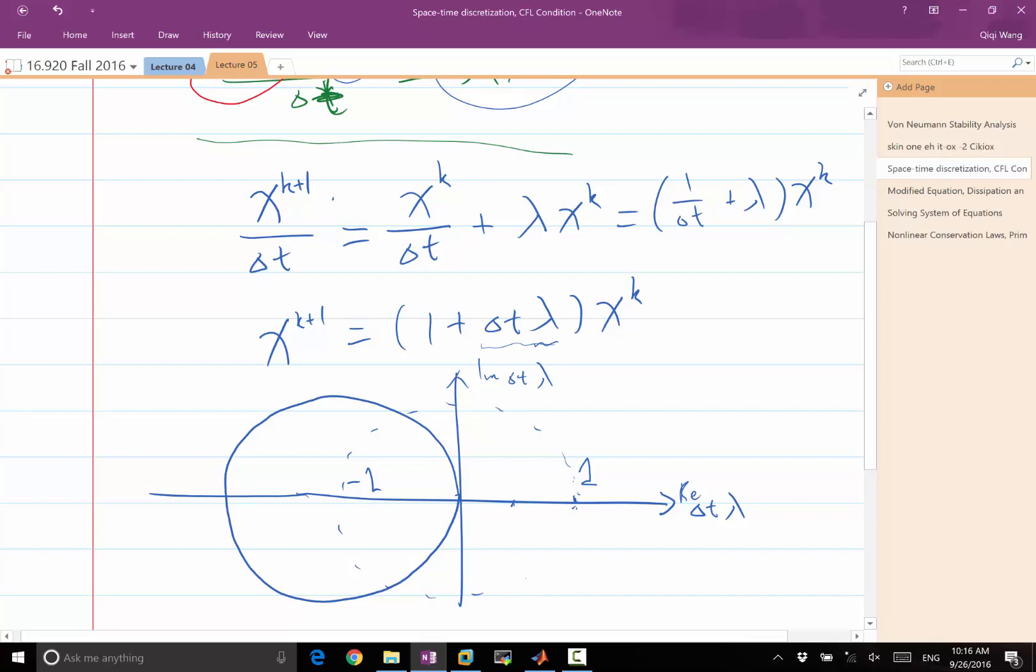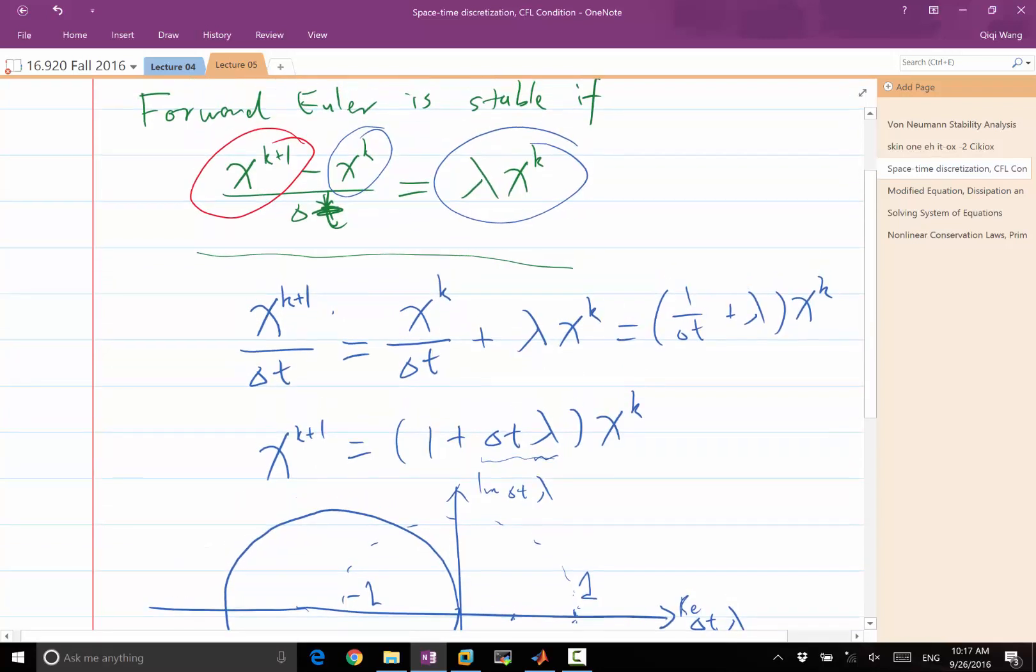And the dashed circle has a modulus less than 1. And the modulus less than 1 is what we need for this iteration to be stable, not grow. The magnitude of xk plus 1 is equal to the modulus of this complex number times the magnitude of xk. So you need something that is less than unity for the iteration to be stable. All right. So that's for this scalar equation.